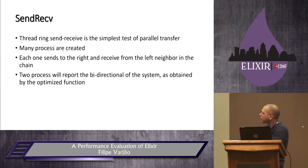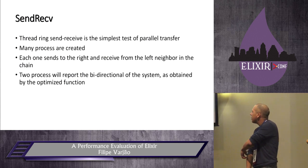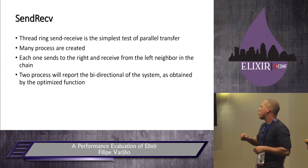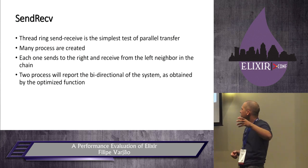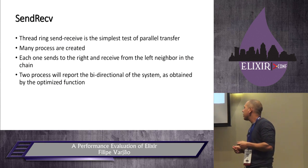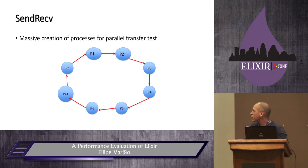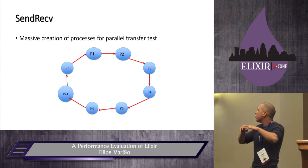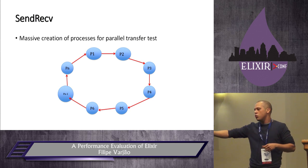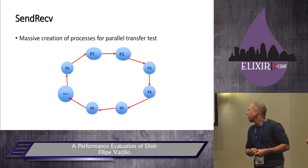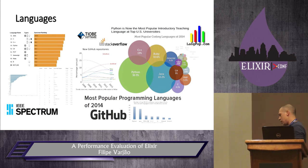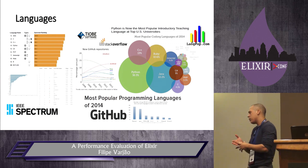Send-receive is the ring test — a simple test for parallel transfer. Many processes are created and each one sends to the ring and receives from its left neighbor in the chain. One process will report the bandwidth of the system as obtained by the optimization function. We have massive creation of processes and process one sends to the ring and receives from the left.